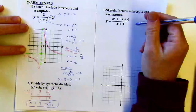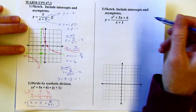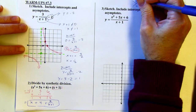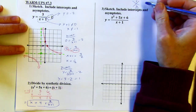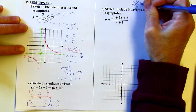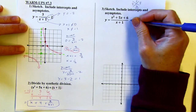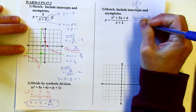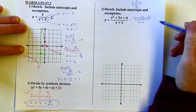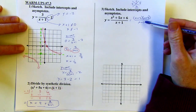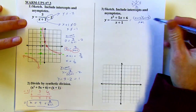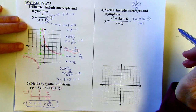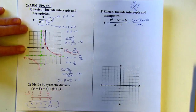Looking at this next problem, I'm thinking let's try to factor because I might be able to reduce after factoring. On top, I'm looking for two numbers that add to 5 and multiply to 6 — 2 and 3 work. So the top factors to x plus 2 times x plus 3, all over x plus 1. I can't do any reducing here. If I could, it would just be a line with a hole in it, but it's not that simple. It's still worth factoring just to make sure.